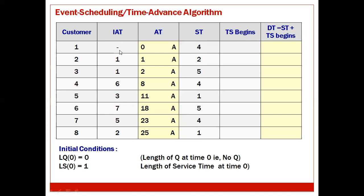You should be very clear that the first customer's IIT should be made as a hyphen or empty. You have to assume that the first customer arrives at time 0, even if they don't specify. So IIT for the first one is a hyphen, and ST is given for all 8 customers because service is provided for all. Now let us compute arrival time, which is the cumulative sum of IIT. Initially arrival time is 0, then 0+1=1, 1+1=2, 2+6=8, 8+3=11, 11+7=18, 18+5=23, 23+2=25.